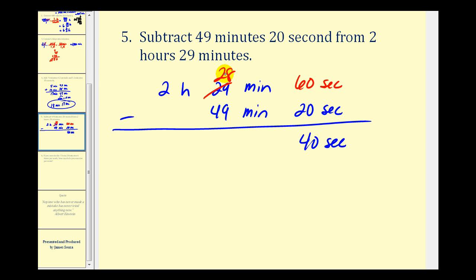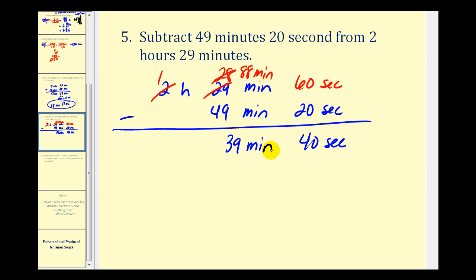We don't have enough minutes to subtract forty-nine, so we borrow one hour, which gives us an extra sixty minutes. Sixty plus twenty-eight gives us eighty-eight minutes. Eighty-eight minus forty-nine minutes is thirty-nine minutes, and we're left with one hour. We perform these subtraction problems just like subtracting whole numbers, except when borrowing different units we must do the conversion.